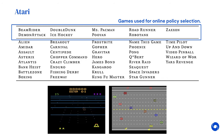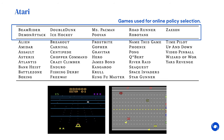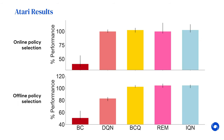Atari games are another well-known online reinforcement benchmark. They require learning from pixels and include a range of difficulties. We categorize each task by difficulty when splitting them into online and offline policy selection tasks. Due to the large number of tasks, we aggregate the results. Off-the-shelf RL algorithms such as REM and IQN are competitive with BCQ, which is designed for the offline setting. The results also indicate that DQN is not very robust to the choice of hyperparameters, while other methods seem to be.